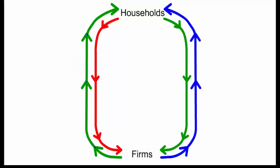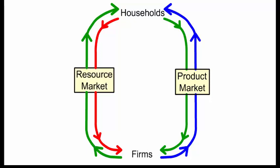The right side of the circular flow is called the product market. The left side of the circular flow is either called the resource market or the factors market for the factors of production.